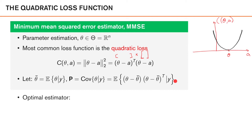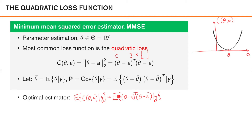In order to derive the optimal estimator of theta, it's useful to simplify the function we're trying to minimize. We're interested in minimizing the posterior expected loss, which is the expected value of our cost function conditioned on y. In this case, our loss function is the quadratic loss. A useful strategy is to take the gradient of this expression with respect to a, set it to zero, and solve for a. However, I personally prefer a different trick to arrive at the optimal solution.